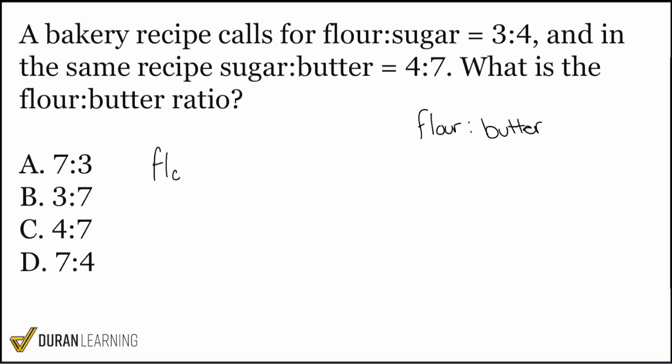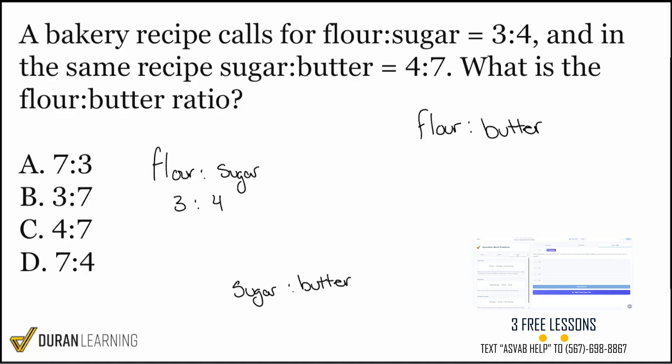So because of that, what we want to do is we want to go ahead now and write those ratios out. We have flour to sugar being 3 to 4, and then we have the recipe of sugar to butter, that's going to be 4 to 7. So when we have this and we take a quick little peek, everybody, what do we notice is the same between these two ratios?